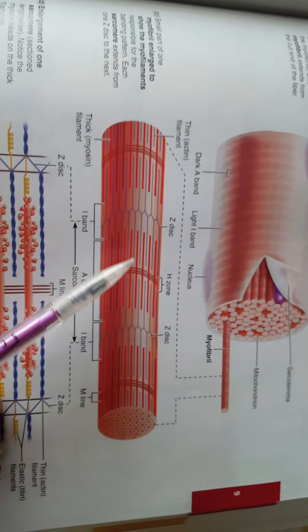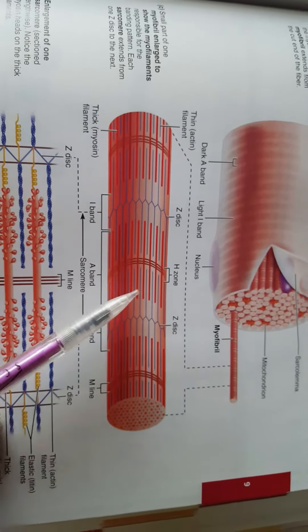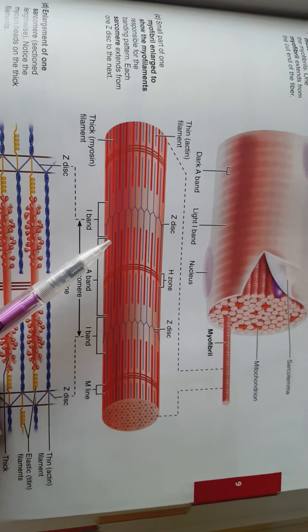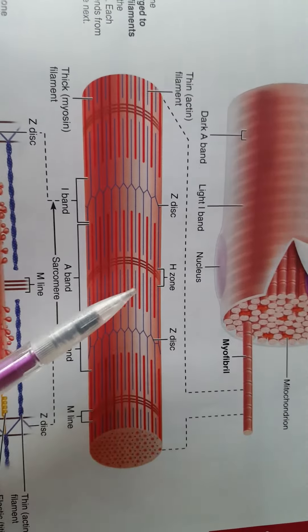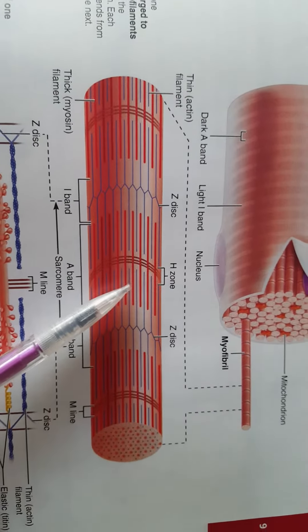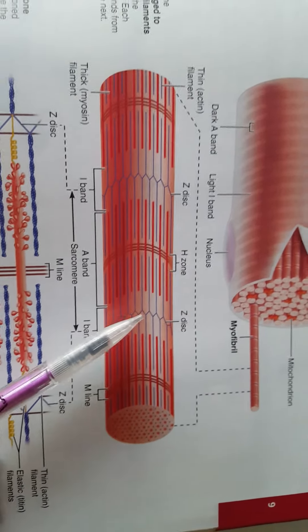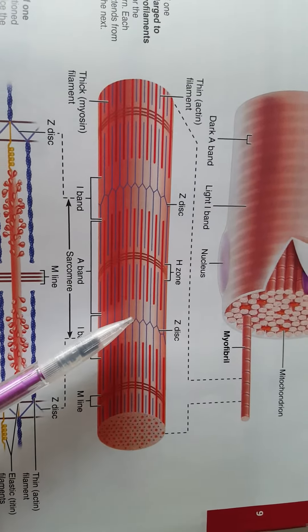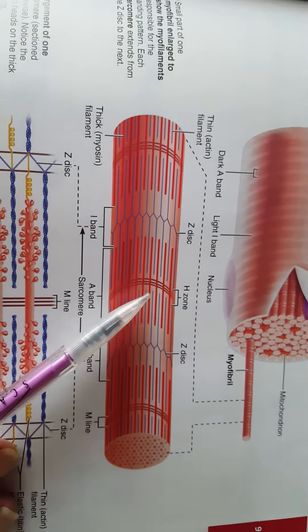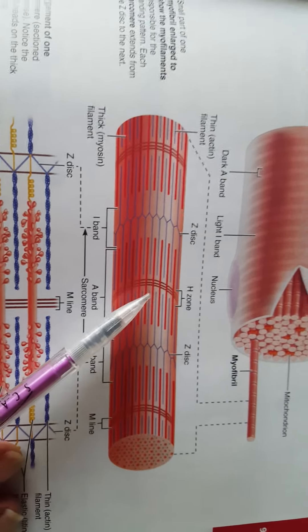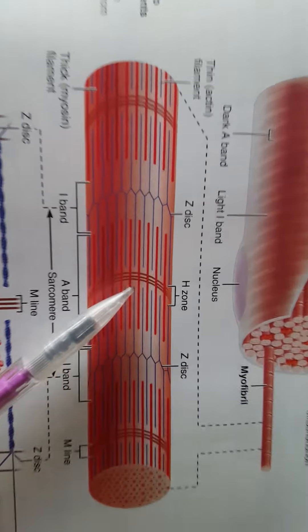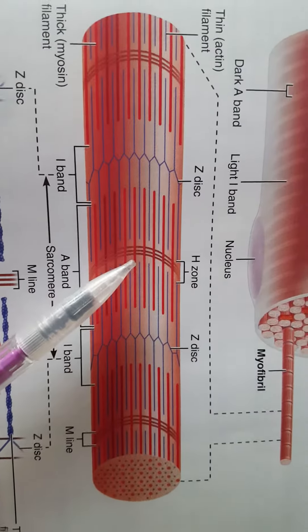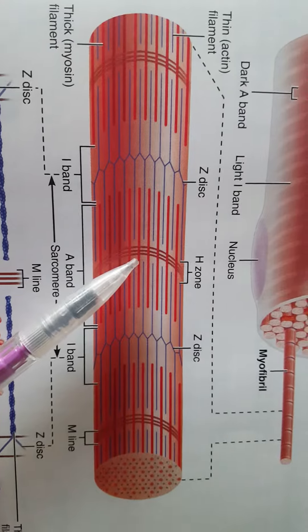Then we have the dark A band, formed by the overlapping actin and myosin. Remember that myosin is a thicker filament and actin is a thin filament. Then we have the H zone in the center where you just have myosin only — there's no actin there — and then we have the M line in the middle.